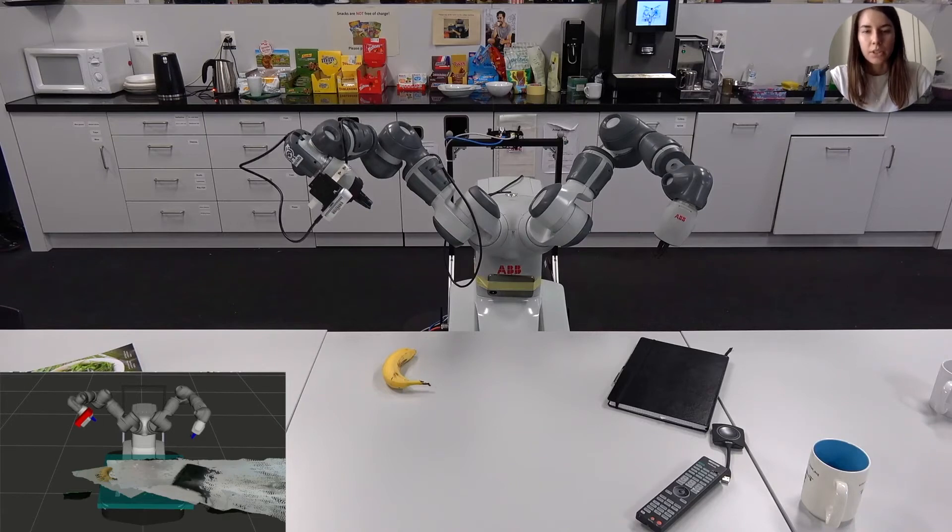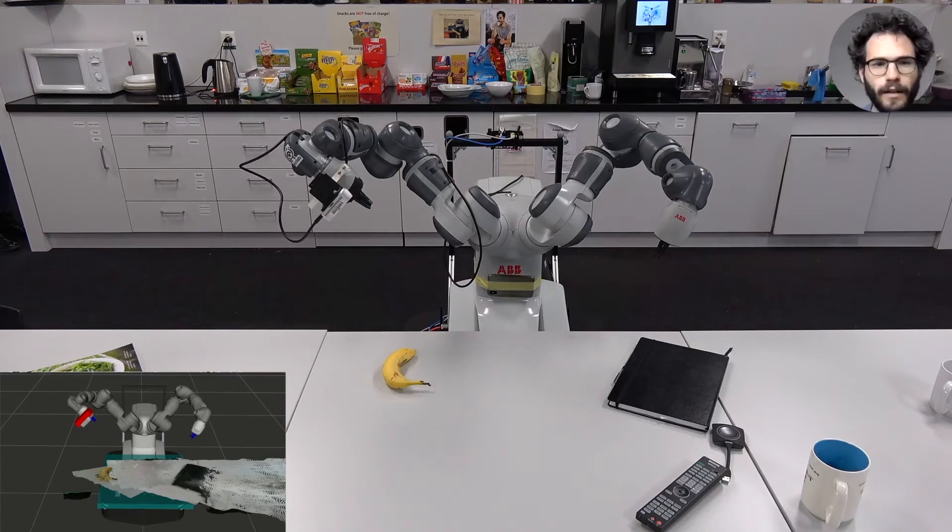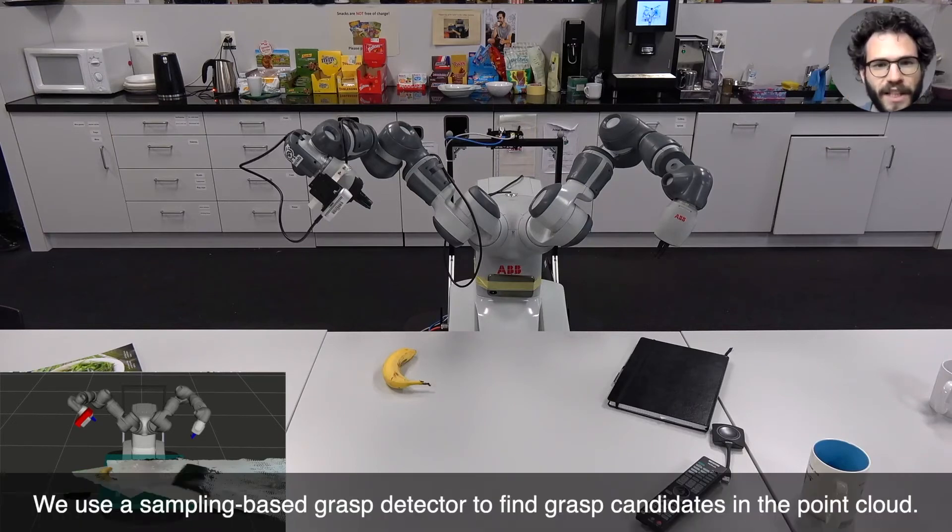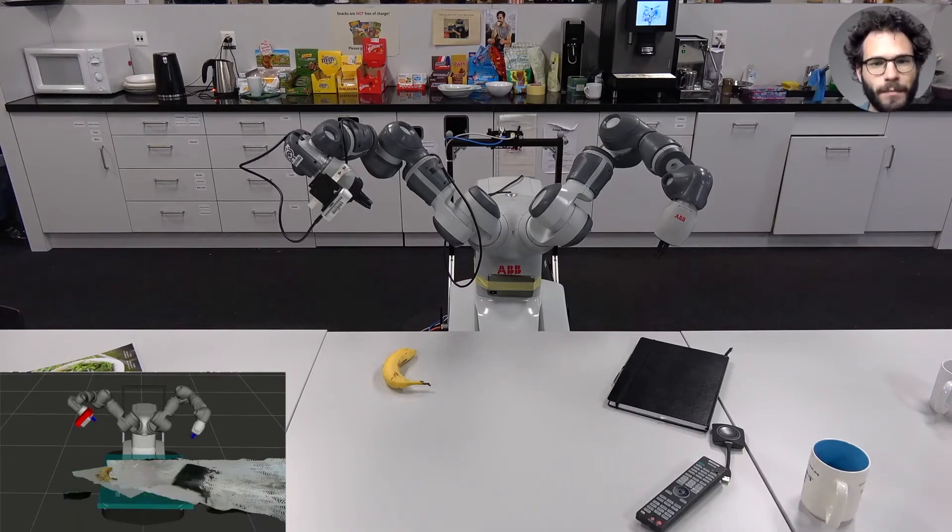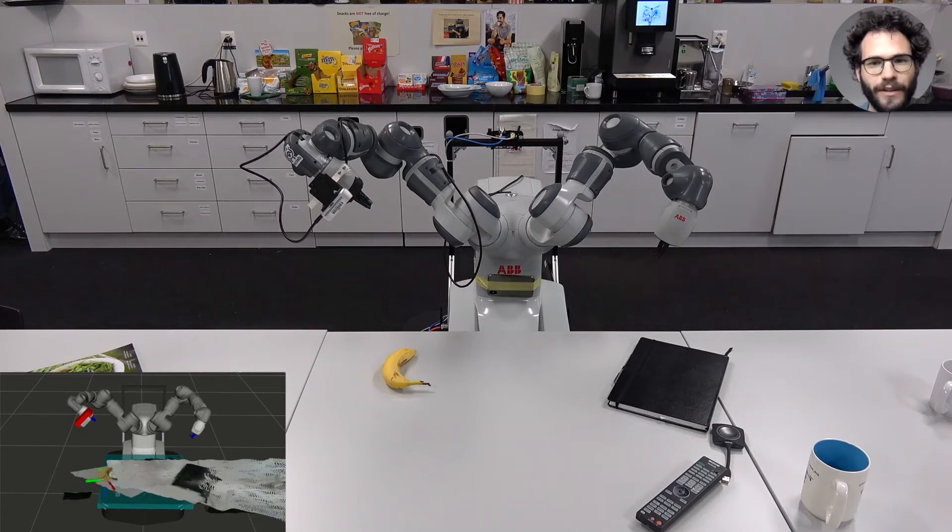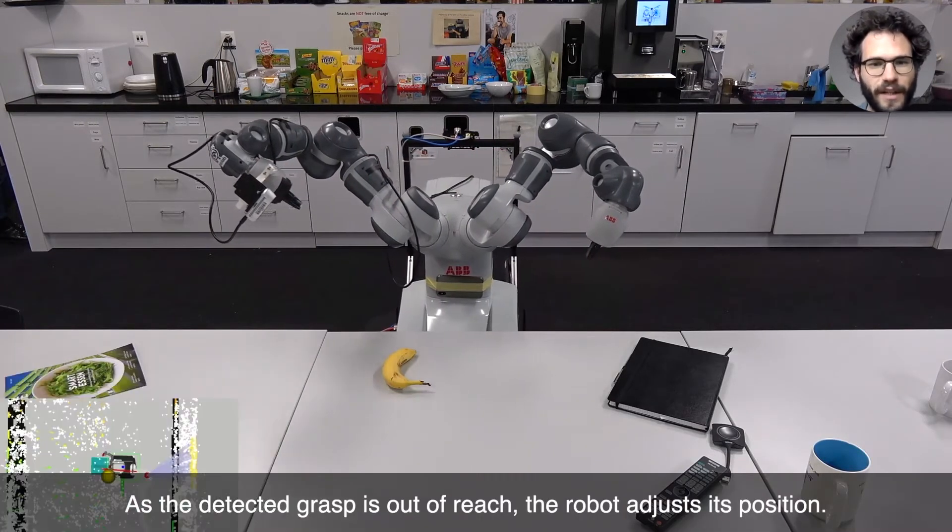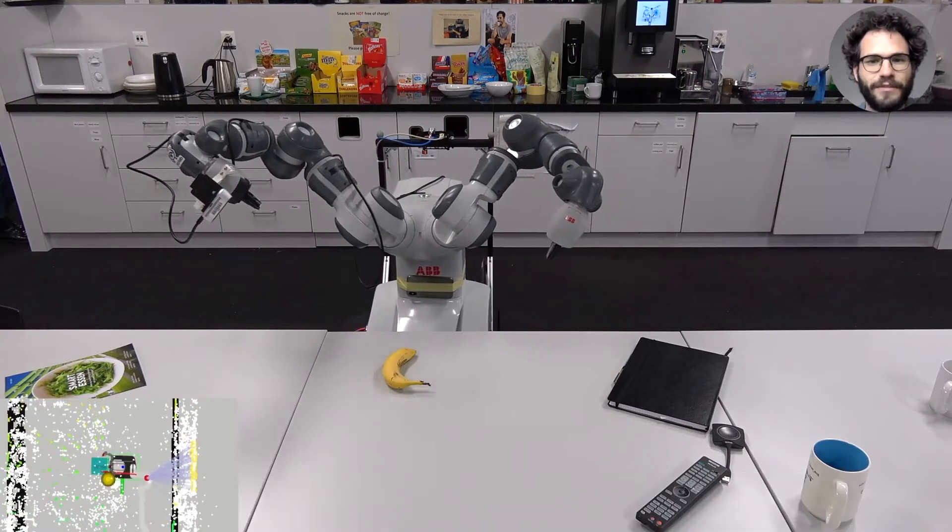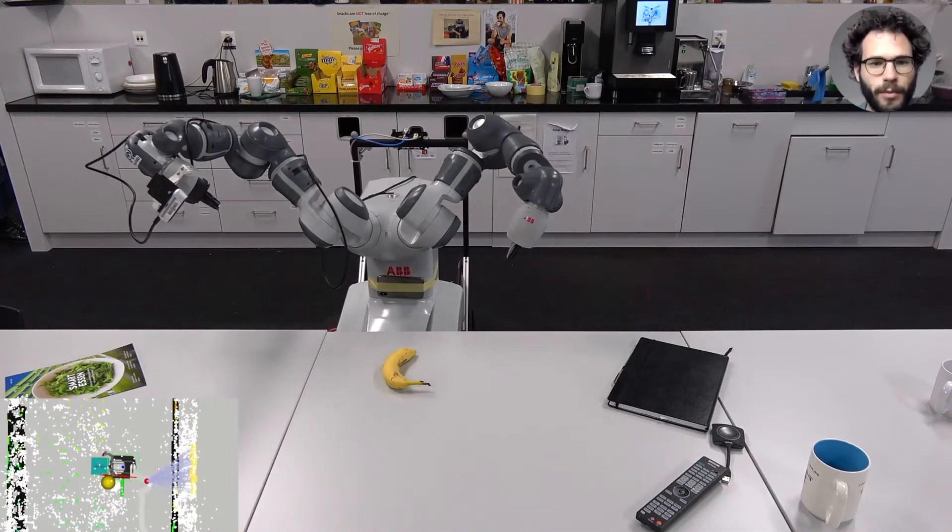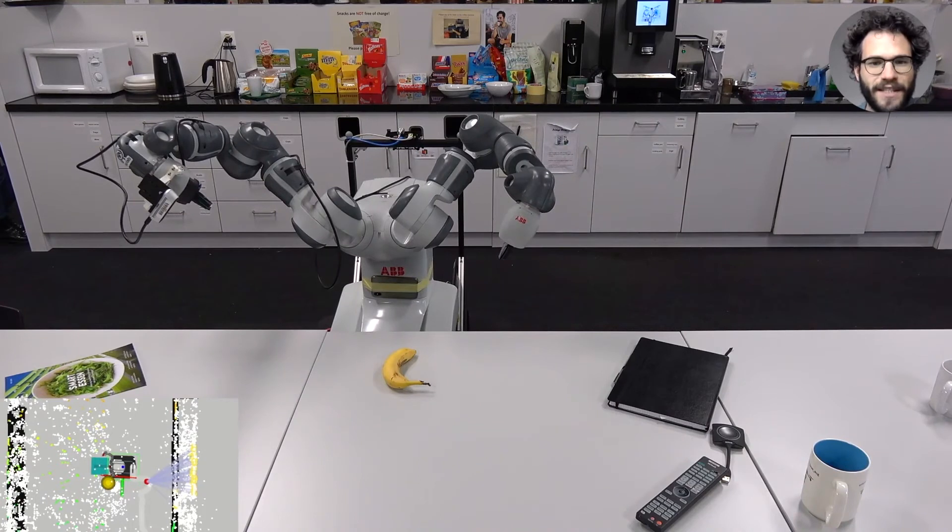The reconstructed scene is fed to GPD, a sampling-based six-degree-of-freedom grasp detector, which returns a list of scored grasp hypotheses visualized as coordinate systems in the bottom left. Since in this experiment the banana is out of reach of the robot's left arm used for grasping, the robot adjusts its position and repeats the previous step.